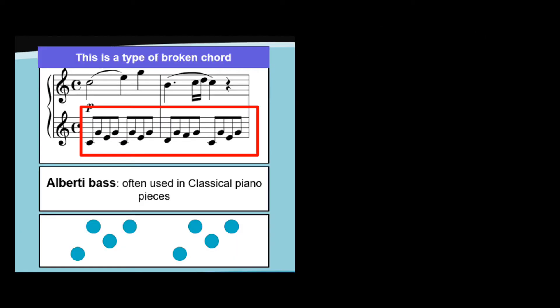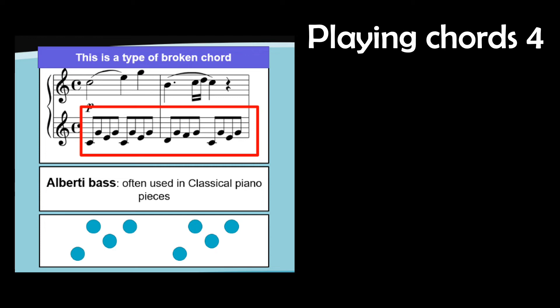The Alberti bass is a very specific type of broken chord, which is popular in piano music because it fits so well under your hand. You play the root of the chord first, then the fifth, then the third, and then the fifth again. This example is from Mozart's Piano Sonata in C major.